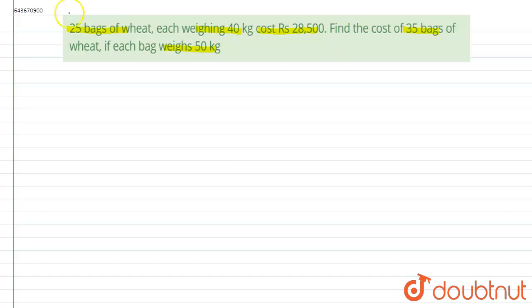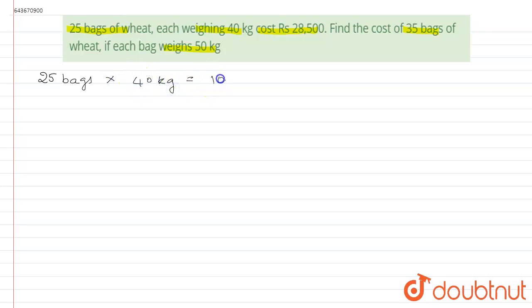First, we find the total weight of 25 bags: 25 bags × 40 kg = 1,000 kg. So 25 × 40 equals 1,000 kg, and 1,000 kg costs rupees 28,500.